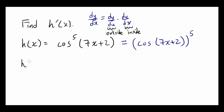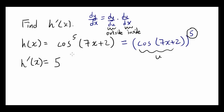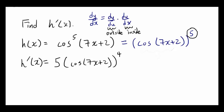For h prime of x, the outermost function is the one raising everything to the fifth power. If we consider cosine of 7x plus 2 as u, then u to the fifth power is the outer function. The derivative of u to the fifth power is 5 times u to the fourth, so in this case that becomes 5 times cosine of 7x plus 2 to the fourth power.